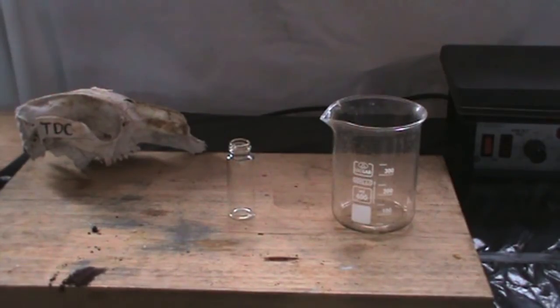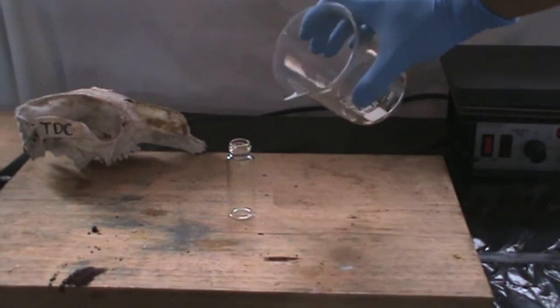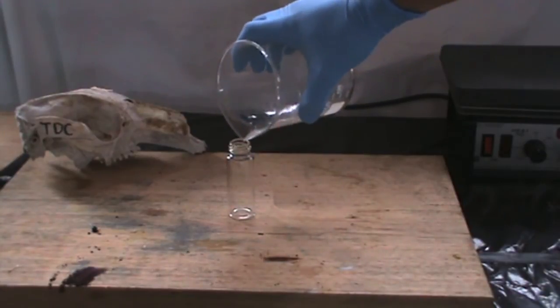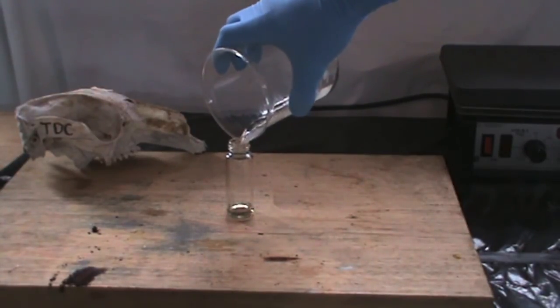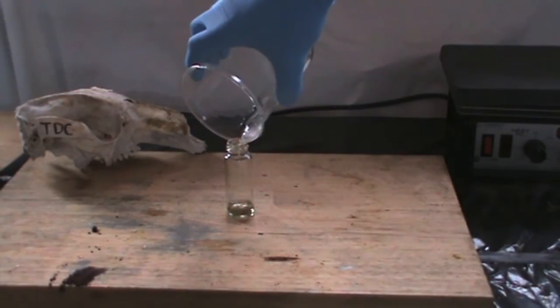Remove the beaker from the hot plate and let it cool. Pour the contents into a glass vial. We can also see the liquid is quite viscous. Concentrated sulfuric acid is a viscous liquid.